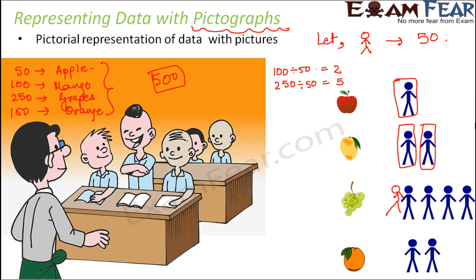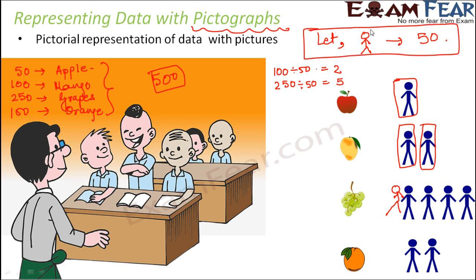The beautiful thing here is that instead of drawing 50 pictures, which would be irrelevant and time consuming, we assume that one picture represents 50 people. Now here I said 50, but in case you are dealing with thousands, you can even say that one picture represents 1000 people, and so on.